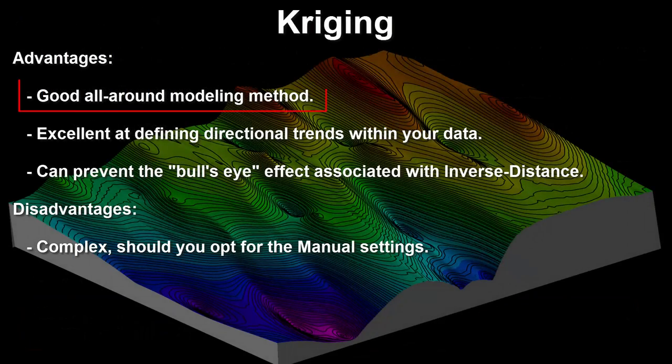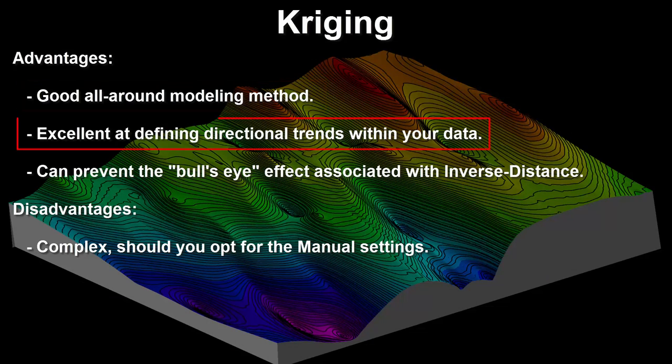Advantages? Kriging is a good all-around modeling method. It's excellent at defining directional trends within your data and can prevent the bullseye effect associated with inverse distance. The disadvantages are that it's complex should you opt for the manual settings.